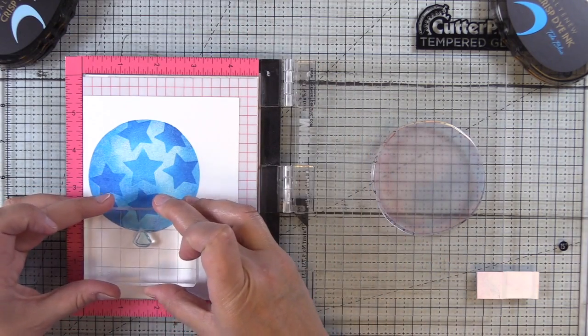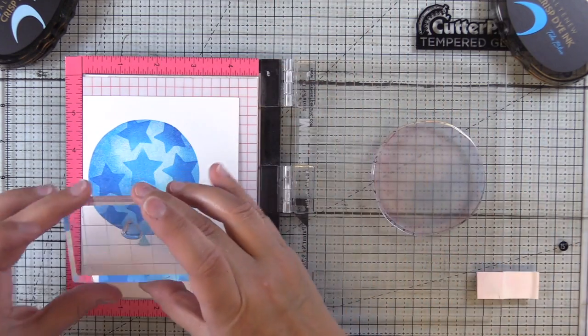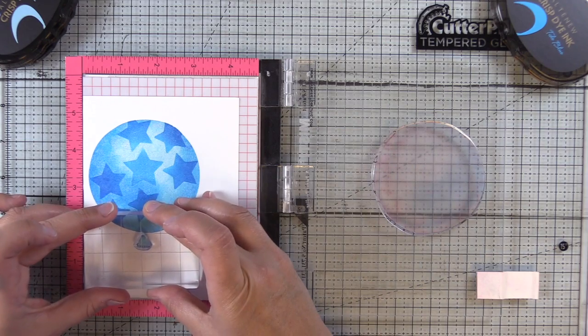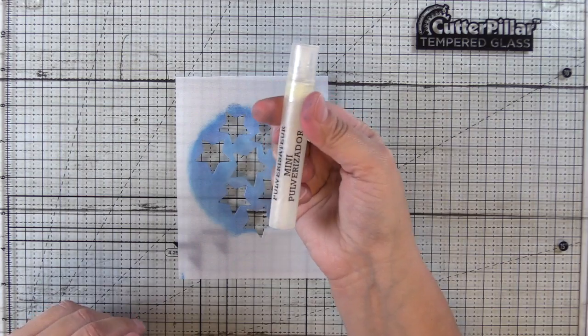Included in the stamp set is the little balloon end, where you tie it. I'm going to add that and I've just rock and rolled it in the darker blue. I stamped with the mid-tone and rock and rolled it in the darker blue to again add a little bit of shading to that.